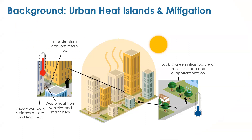Urban areas have been known to experience higher temperatures than their outlying areas, and this difference in temperature is what constitutes an urban heat island effect. The difference in temperature has to do with changes in radiative and thermal properties of impervious surfaces — dark surfaces that absorb and trap heat — as well as infrastructure canyons that retain heat, and waste heat from vehicles and machinery.